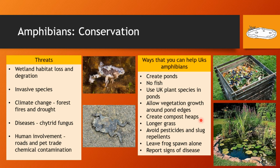Another way you can help is to create compost heaps. Amphibians, like reptiles, are cold-blooded and ectothermic, and compost heaps provide a warm place to hibernate and increase their body temperatures during colder periods. Longer grass also helps, providing protection from predators such as birds and house cats. Another way is to avoid pesticides and slug repellents. Chemical contamination is a big issue for amphibians because of their permeable skin and aquatic lifestyle — chemicals can diffuse through their skin, drying it out, and can lead to internal problems, poisoning, blood poisoning, and birth defects in offspring.